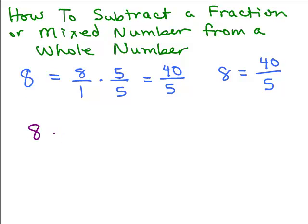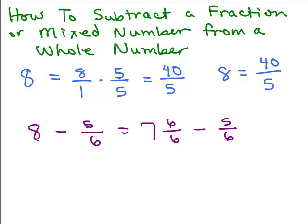Now let's take a problem using this idea. Let's do 8 minus 5 sixths. One way is to think of 8 as 7 plus 1, and instead of writing the 1, write it with the same denominator as 5 sixths — so write 1 as 6 sixths. This becomes 7 and 6 sixths minus 5 sixths. I still have 7, and then 6 sixths minus 5 sixths is 1 sixth. So that's one way of doing it.